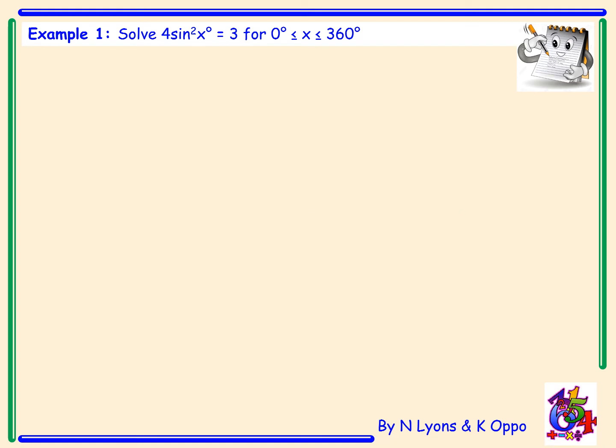Example 1. Solve 4 sin²x = 3 for x lying between 0 and 360 degrees. The first step is to rearrange to get sin²x on its own, so sin²x is equal to 3 over 4.